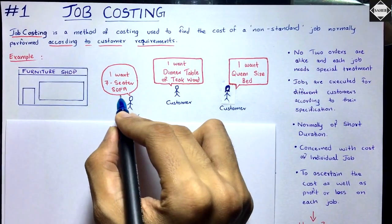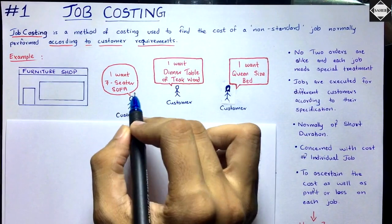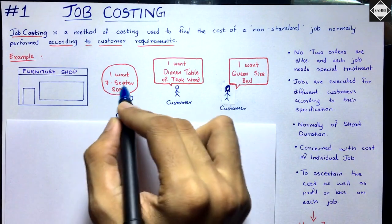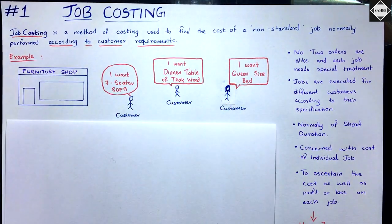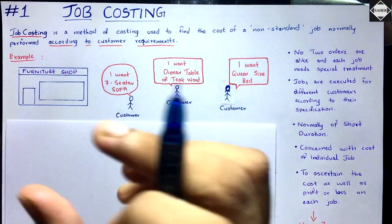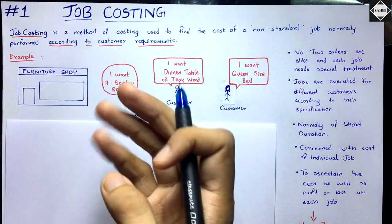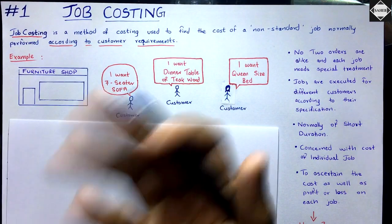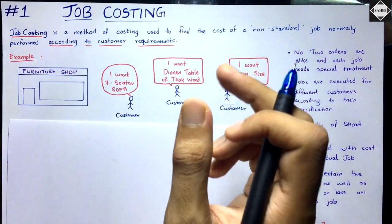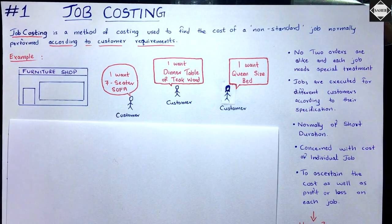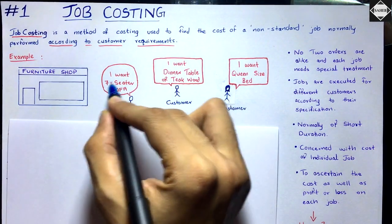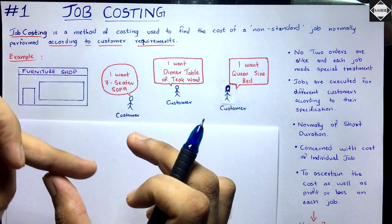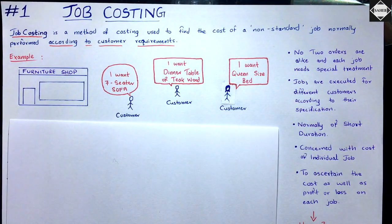How will the furniture shop determine the cost of the seven-seater sofa? They may never have manufactured this specific type before. They will have to prepare a specific cost sheet for this job. Once they get the total cost, they will add a certain percentage of profit and arrive at the selling price. That's what we are going to do in this chapter.